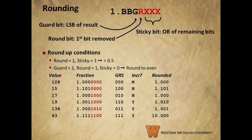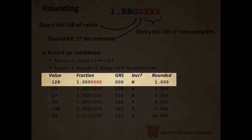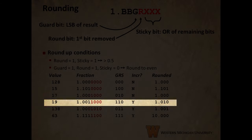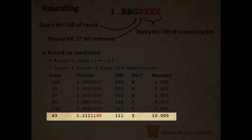Let's take a look at a few of the examples. In the case of 128, the round bit is zero, so we know that we are less than halfway to the next value, so we don't increment. In the case of 17, the round bit is one and the sticky bit is zero, which means we are exactly halfway between the possible rounded values, but the guard bit is zero, which means the result is already even, so we don't need to increment. For 19, the round bit is one and the sticky bit is zero, just like with 17, but the guard bit is one in this case, so we need to increment for the round to be even. Finally, in the case of 63, the round bit is one and the sticky bit is one, indicating that we are more than halfway to the next value, so we will increment the result.